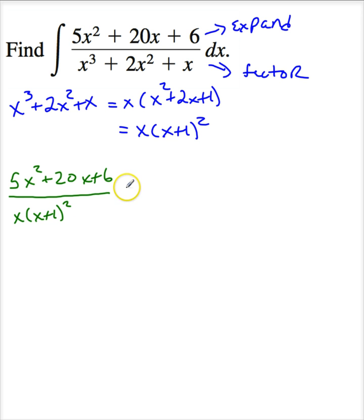Now this has to equal a over the first term, which is x, plus, now there are two of these, so you have to remember this is b divided by x plus 1 plus c divided by x plus 1 squared. This is a repeated factor. So you have to have two different terms, one with squared and one with x plus 1 to the first power.